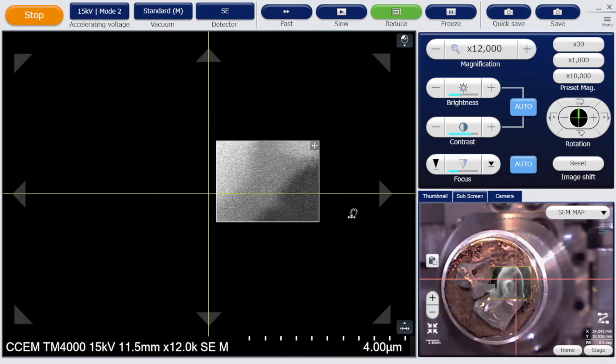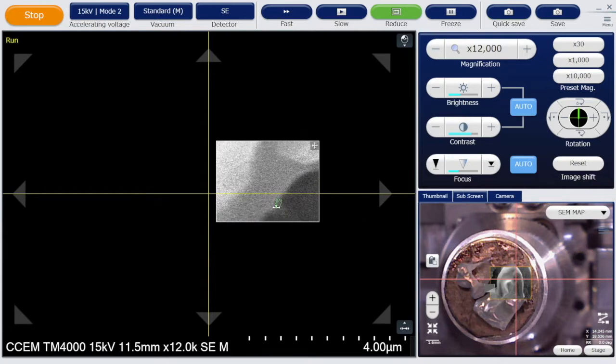Astigmatism can be seen in the image by movement when you move in and out of focus and the stretching of the image in one direction.